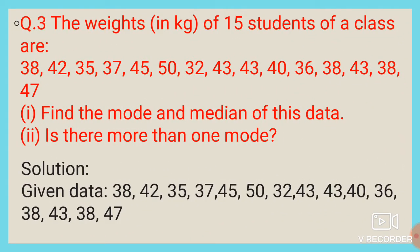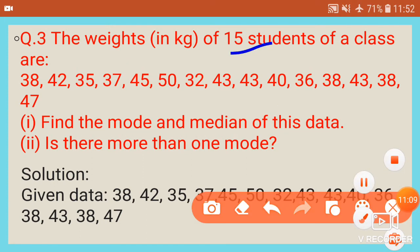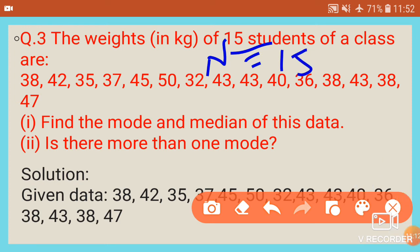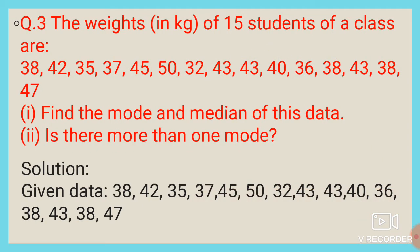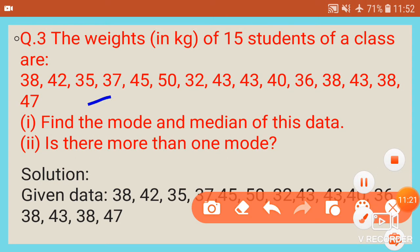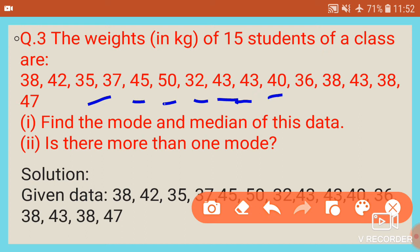Question number 3: the weights (in kg) of 15 students of a class are: 38, 42, 35, 37, 45, 50, 32, 43, 43, 40, 36, 38, 43, 38, 47. So n = 15.